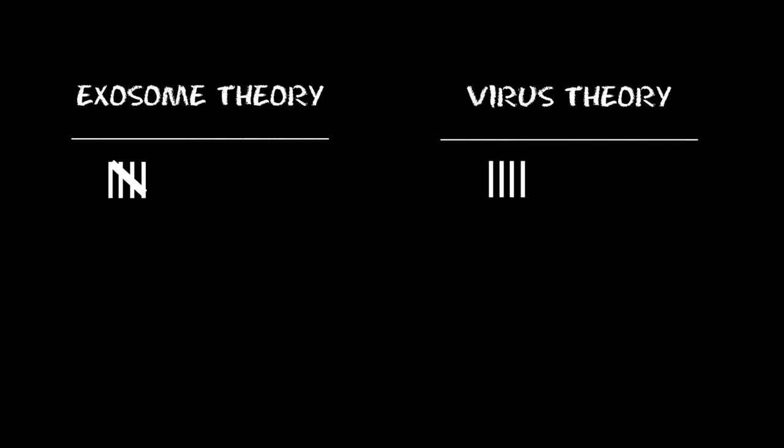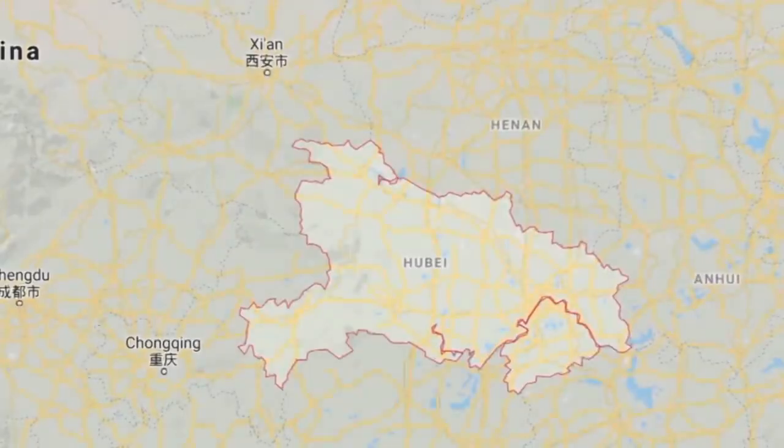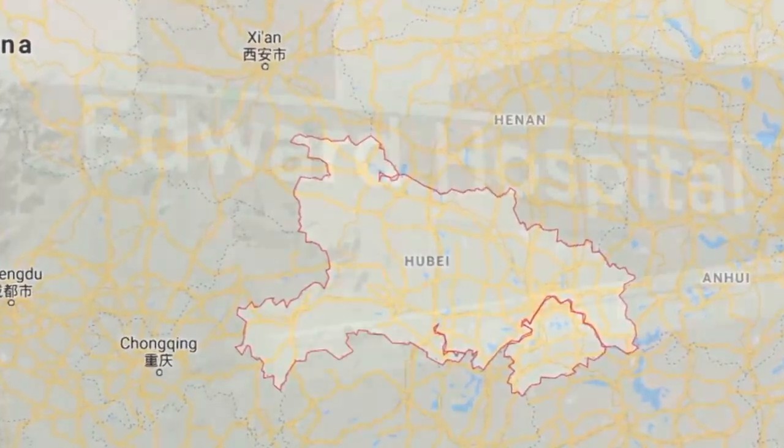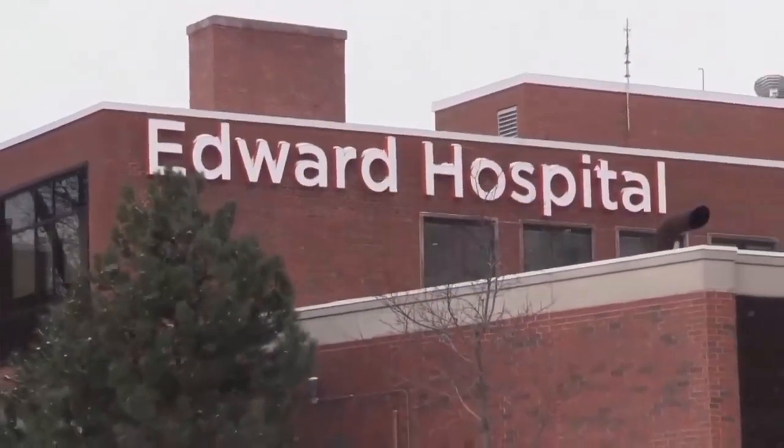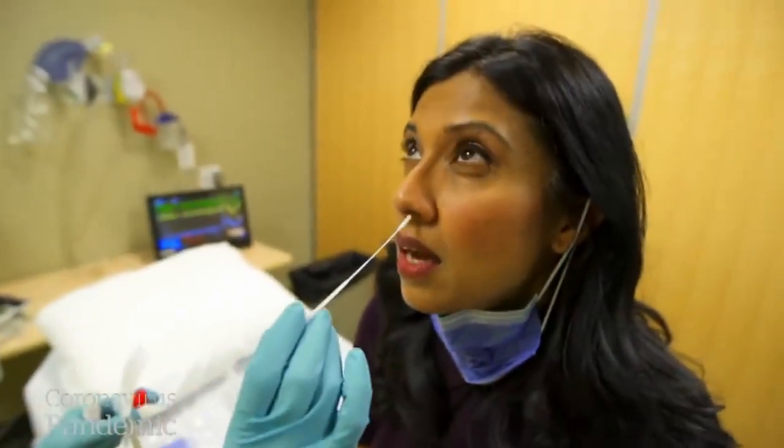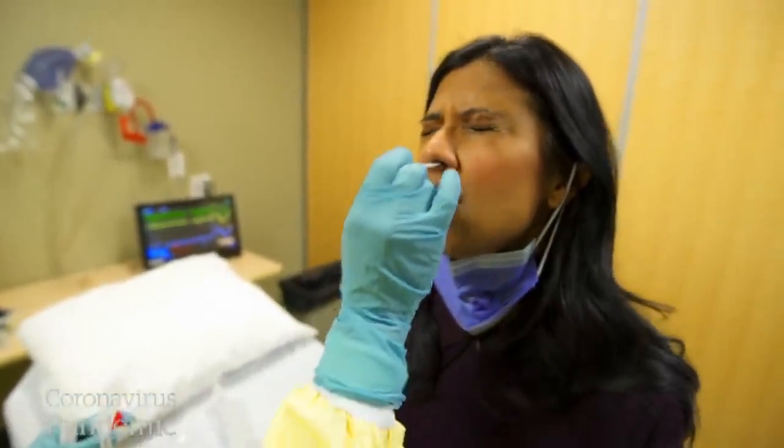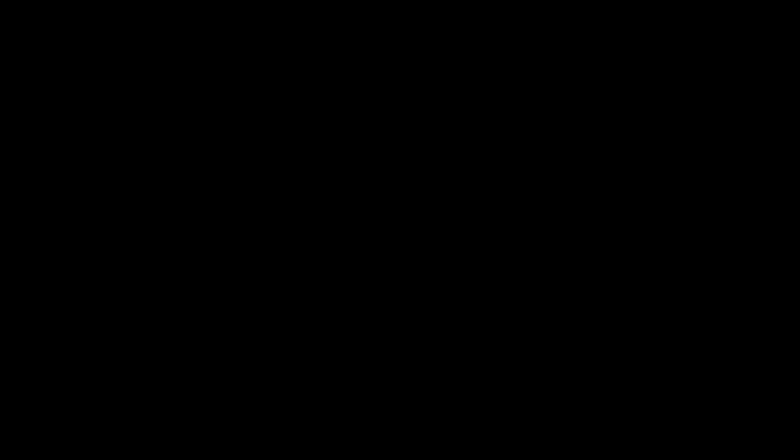Let's take a look at the first case of transmission in Illinois. A woman traveled to Wuhan, came back, and both she and her chronically ill husband ended up testing positive. Medical authorities then tracked over 300 people who had had close contact with them to see who acquired the virus. And guess what? Zero positives. This again would make sense in exosome theory since exosomes are not contagious, but it would not make sense for virus theory where this is supposed to be an infectious virus.